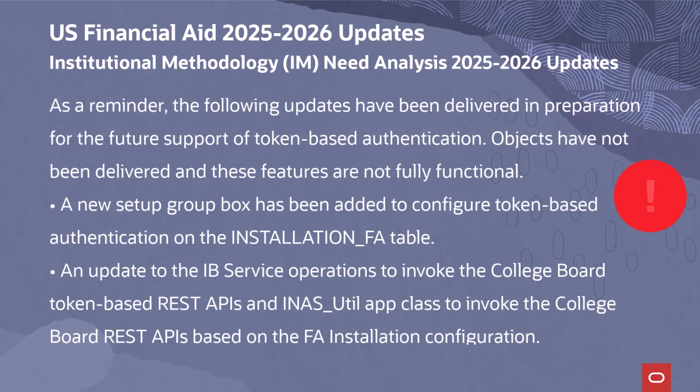As a reminder, the following updates have been delivered in preparation for the future support of token-based authentication. Note that objects have not been fully delivered and these features are not fully functional. A new setup group box has been added to configure token-based authentication on the installation FA table. Updates have been made to the IB service operations to invoke the College Board token-based REST APIs, and to the INAS UTIL app class to invoke the College Board REST APIs based on the FA installation configuration.